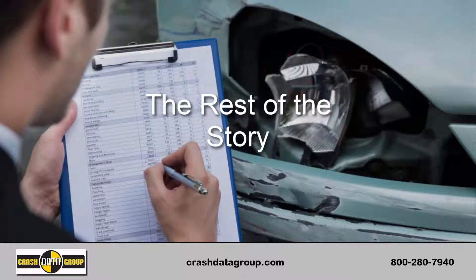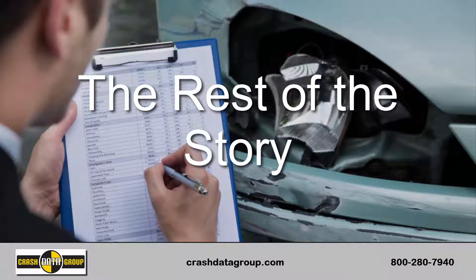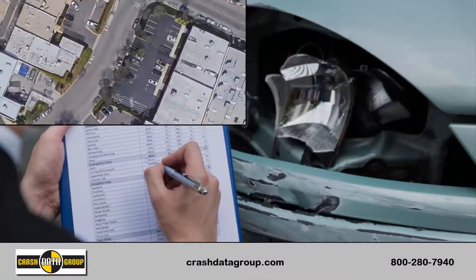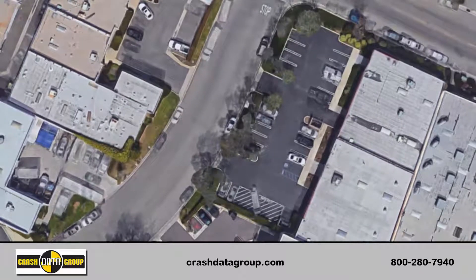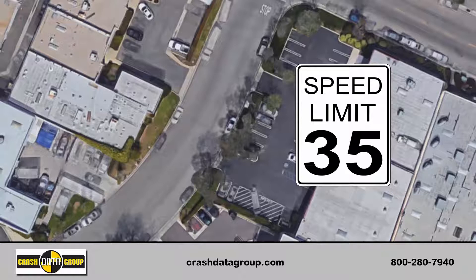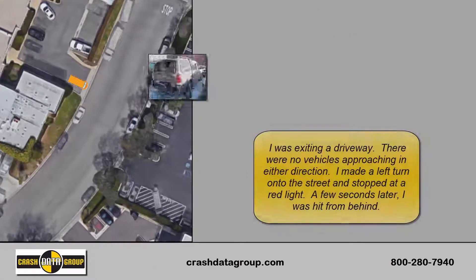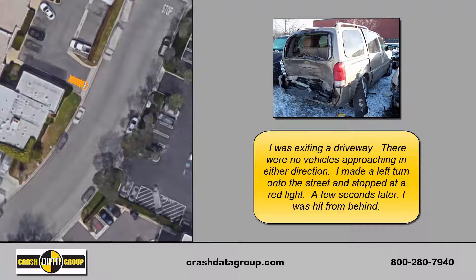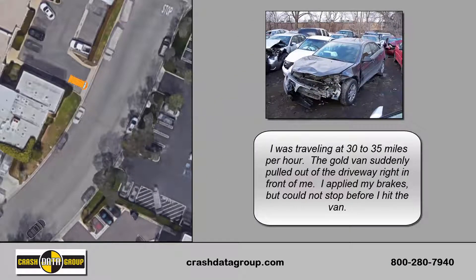Let's take a closer look at how EDR data can shed light on the rest of the story in a typical accident or claim evaluation. In this case, we have a vehicle that was struck from behind shortly after entering the road from a driveway. The speed limit on this roadway is 35 miles per hour. The driver of the gold van said he was exiting a driveway and making a left turn onto the main roadway — there were no vehicles approaching when he started his turning movement. He traveled a short distance, came to a complete stop at a red signal light, and seconds later was struck from behind by the gray car.